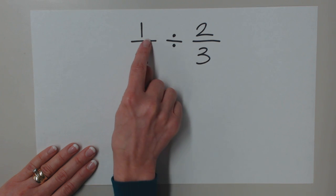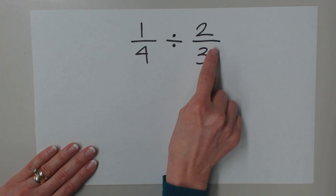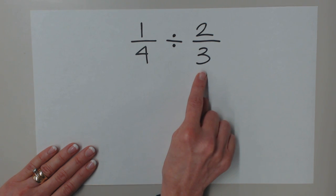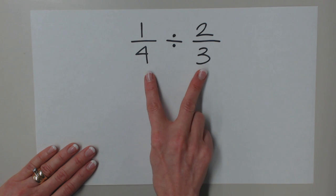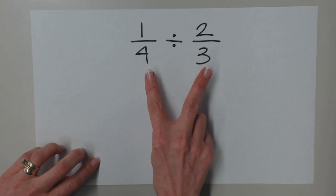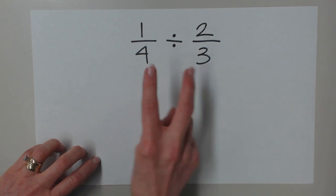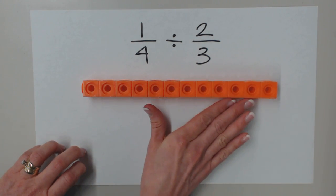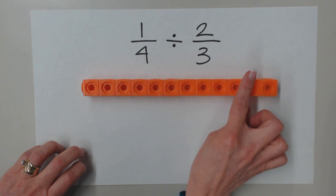That unit needs to be divisible by four so that I can create a one-fourth. It also needs to be divisible by three so that I can create a two-thirds piece. That means that same unit needs to be divisible by both, so I'm going to use the lowest common multiple of four and three, which is twelve, to build my one. So here's my unit of one, and it is twelve little unifix cubes long.